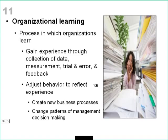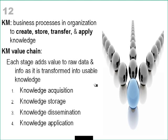Knowledge management consists of business processes in organisations to create, store, transfer and apply knowledge. This defines knowledge management and describes the process from acquiring knowledge to applying it as a value chain, with each stage adding more value to the raw data and information. The stages are: knowledge acquisition, knowledge storage, knowledge dissemination, and knowledge application.